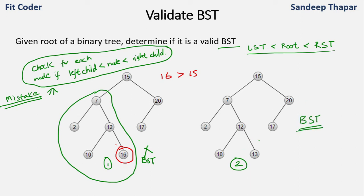Given the root of a binary tree, we have to determine if it is a valid binary search tree. I'll discuss three methods here; let's start with the first method.